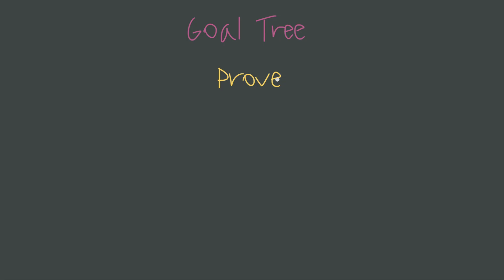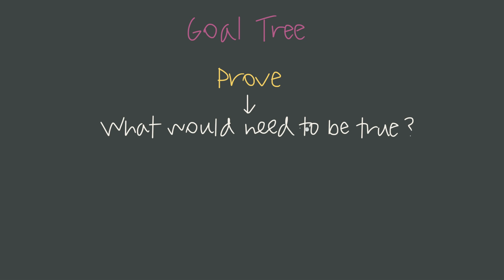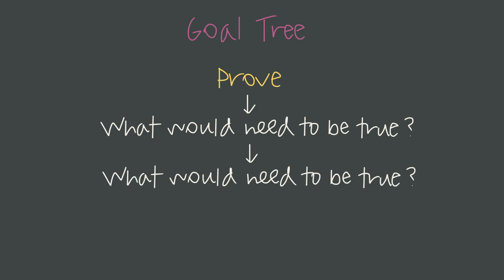One of the biggest challenges when writing proofs is knowing what to write next. It can often be helpful to start with what you're trying to prove and work backwards — ask yourself what would need to be true just before this, and keep working back until you reach the given information. That's called a goal tree. You can also start from the given information and work chronologically forward. Using both approaches can help you figure out how to meet in the middle and build out the proof.